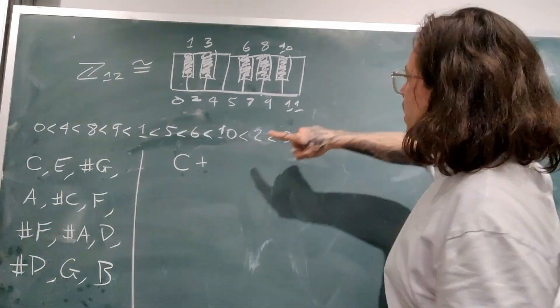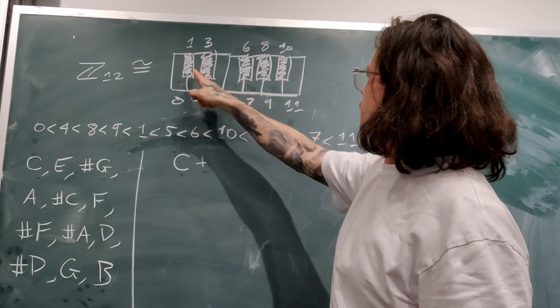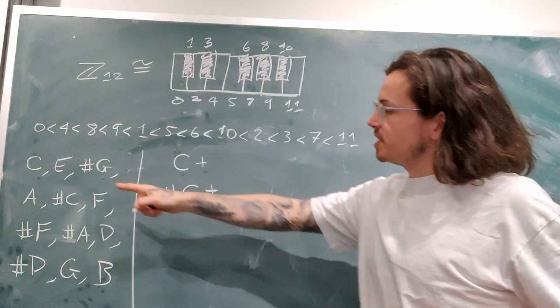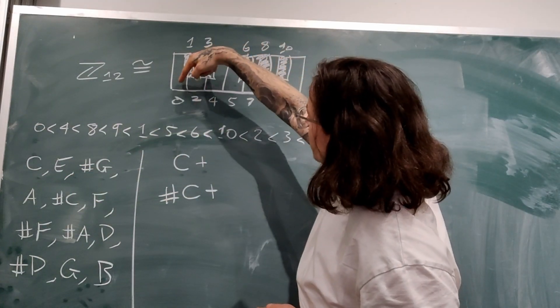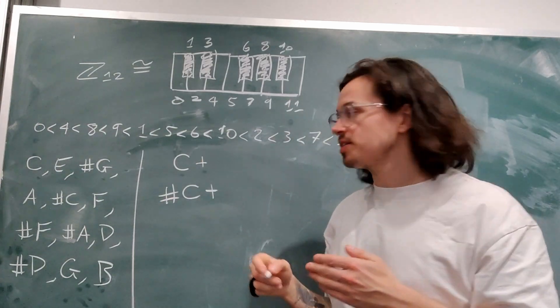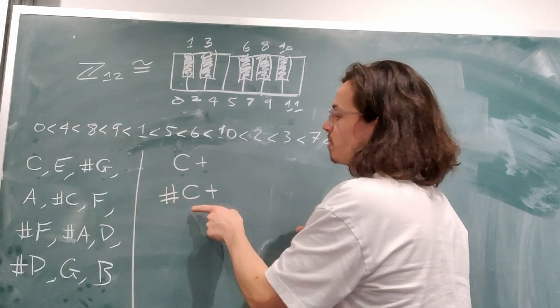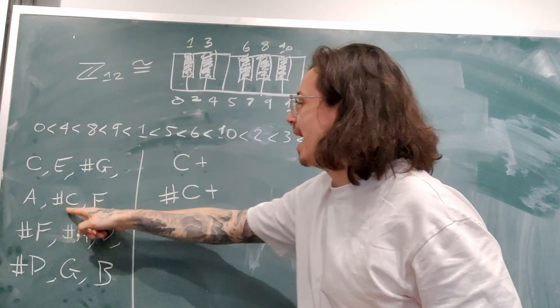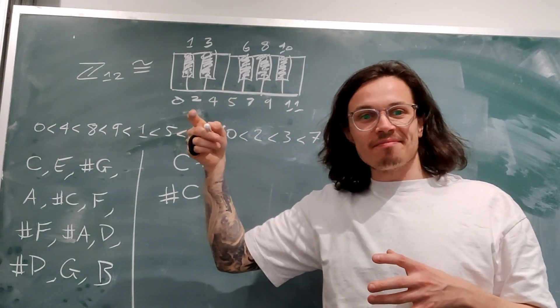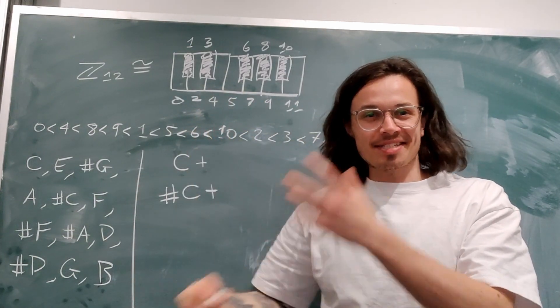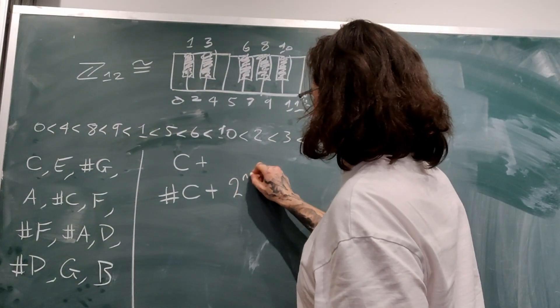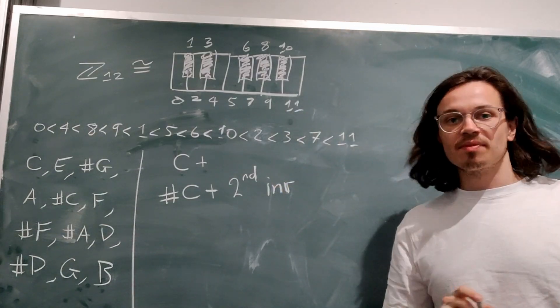Now let's think about A, C sharp, F. Well, that is C sharp augmented. But what you'll notice is that if you look at C augmented, we play C, E, G sharp in that order, meaning that we go from the lowest note to the highest note in terms of pitch. But then when we play C sharp augmented, it goes A, C sharp, F. So we do the highest note in pitch, and then the lowest, and then the middle one. So that's a little bit weird, but that's fine. That's called an inversion. And here it's actually the second inversion.